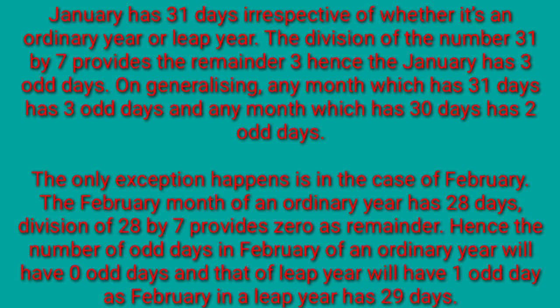The only exception happens in the case of February. February in an ordinary year has 28 days. The division of 28 by 7 provides 0 as remainder. Hence February of an ordinary year has 0 odd days, and in a leap year February has 29 days, giving 1 odd day.